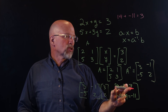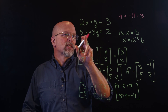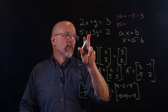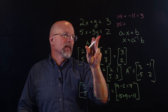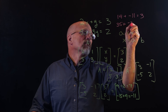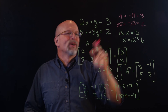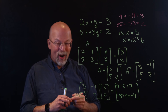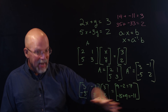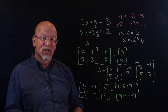Substituting into the second equation: 5×7 = 35, and 3×(−11) = −33. So 35 − 33 = 2, which is the right value. It turns out that using matrices, I can solve a system of equations.